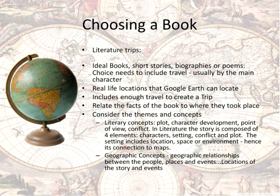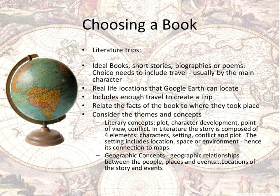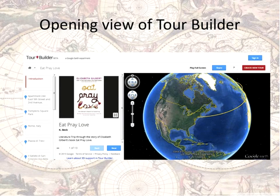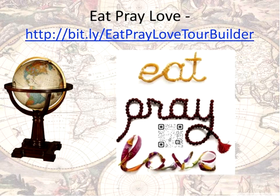If you're going to do any Tour Builder or Maps Engine kind of activity, keep in mind that you want real-life locations — they can't be made up or unidentifiable on the map. You also want the book to relate facts to where that particular thing took place. You could talk about plot, character development, point of view, conflict, location, and geographical relationships. But you have to work through the book thinking about how you'd put it on a map. With Eat, Pray, Love, I knew she was in New York, Italy, India, and Bali — real life locations I could map out.